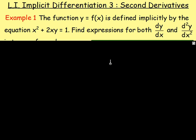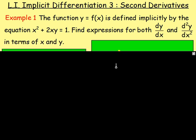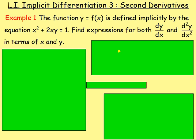Example one: the function y equals f of x is defined implicitly by the equation x squared plus 2xy equals 1. Find expressions for both dy by dx, the first derivative, and d2y by dx squared, the second derivative, in terms of x and y.